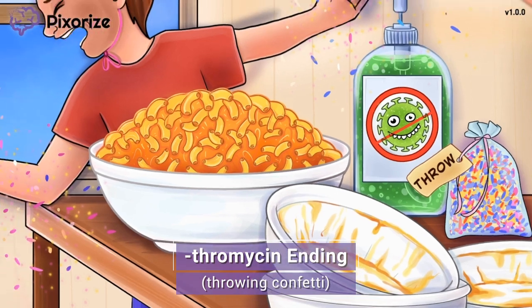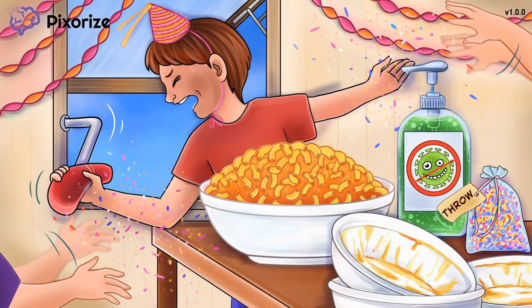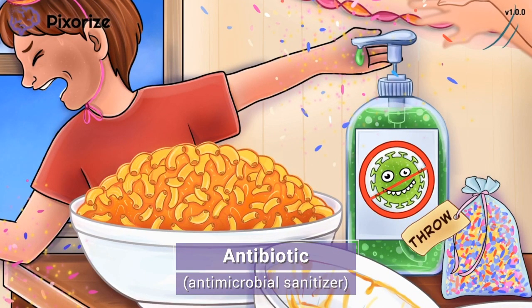With the naming out of the way, let's talk about what macrolides are used for in the clinical setting. Take a look at that bottle of antimicrobial hand sanitizer sitting on the table. Antimicrobial hand sanitizer reminds me a lot of antibiotics, because both are designed to kill bacteria. This is to help you remember that macrolides are antibiotic drugs. Clinically, macrolides are prescribed for a wide variety of bacterial infections — respiratory infections, skin infections, ear infections. You'll see that macrolide drugs are especially used in patients who are allergic to penicillins.